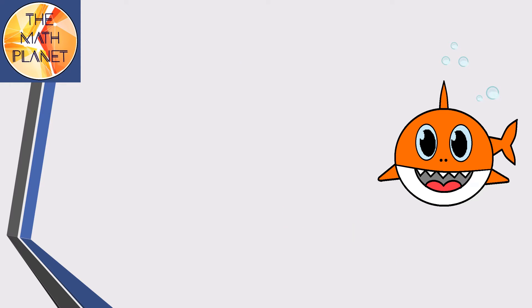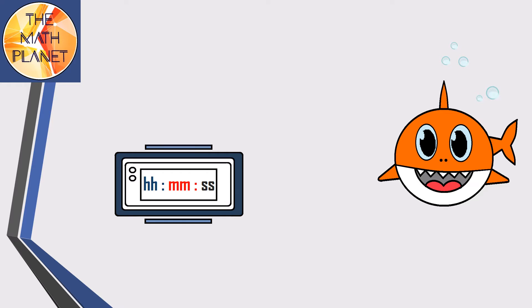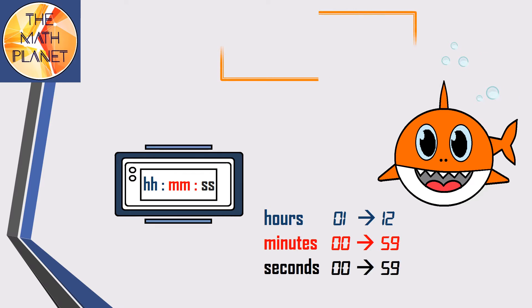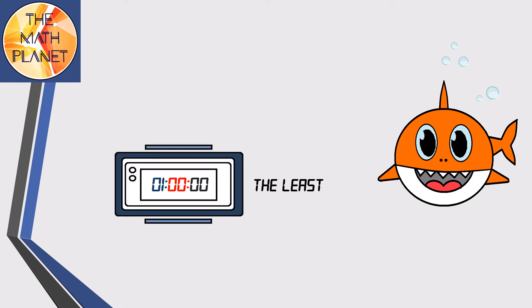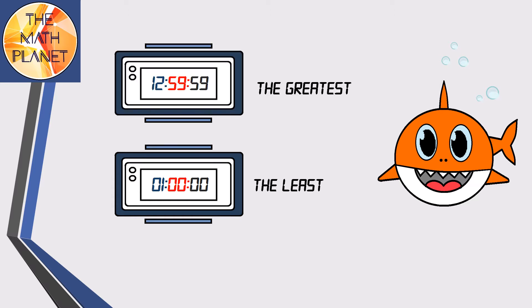The valid values for a digital clock are as follows. The hours can take from 1 to 12. The minutes can take numbers from 0 to 59. And the seconds can take numbers from 0 to 59. Why is this? This is because one hour has 60 minutes and one minute has 60 seconds. This means that the least value to be seen on a digital clock is 1:00, and the greatest value that you can see on a digital clock is 12:59:59.